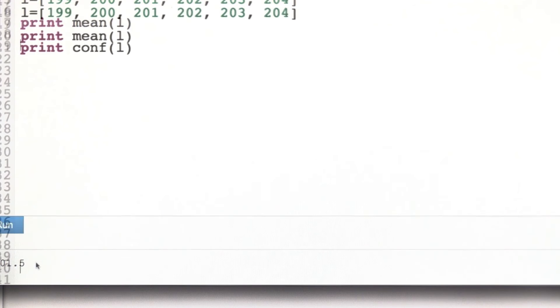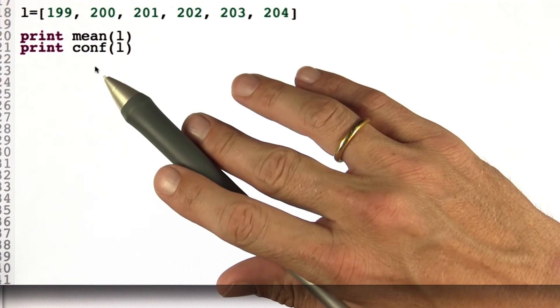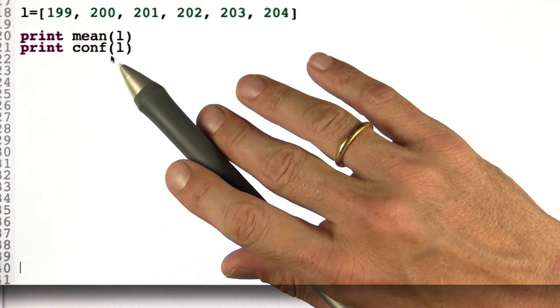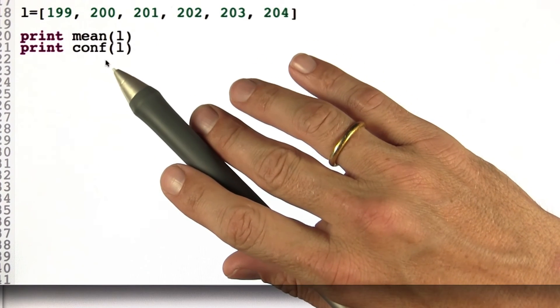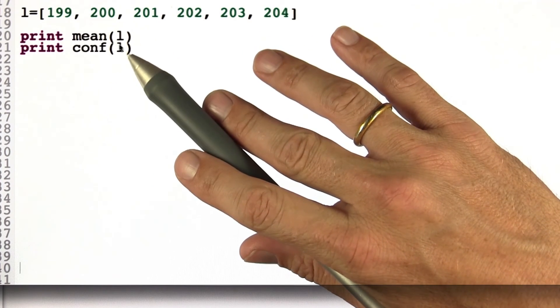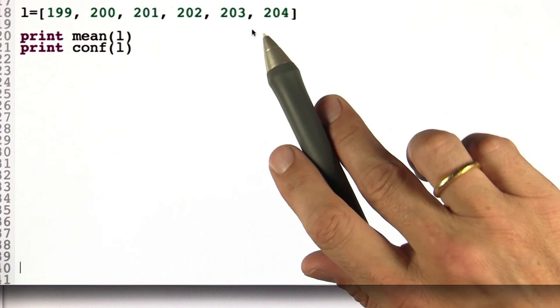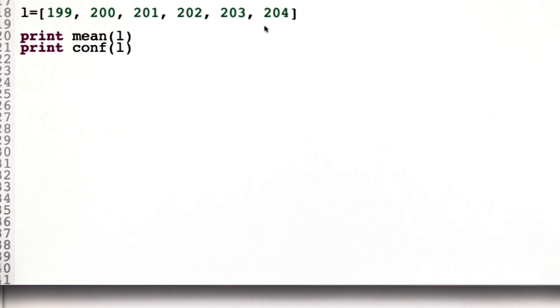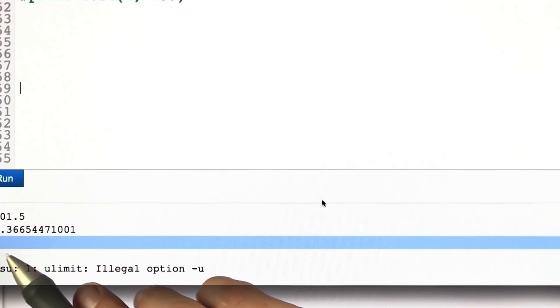And what I want you to implement now is the function conf, which is the plus-minus term in the confidence interval below and above the mean. If I run it for this data sequence over here from 199 to 204, I indeed get 1.366544.